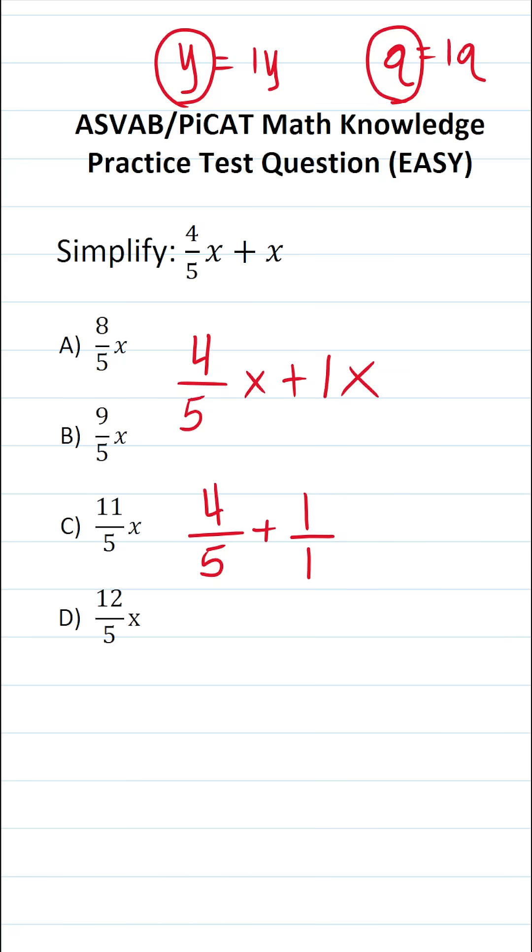One and five have a common denominator of five. So I'm going to rewrite these as needed with a denominator of five.